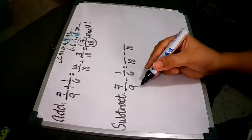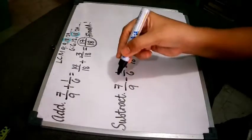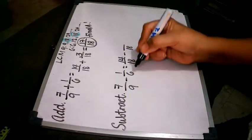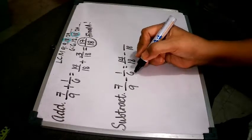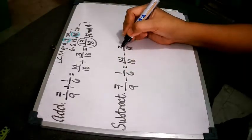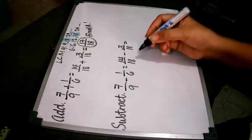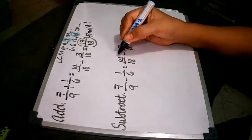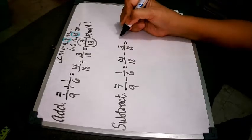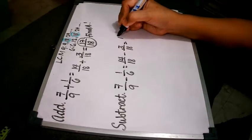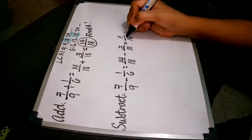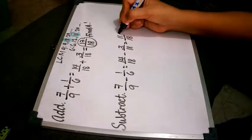Just a sort of review how we find this 14 and 3. 18 divided by 9 equals 2. 2 times 7 equals 14. 18 divided by 6 equals 3. 3 times 1 equals 3. Now we can already subtract the numerator. 14 minus 3 equals 11. And then just copy the denominator, which is 18.